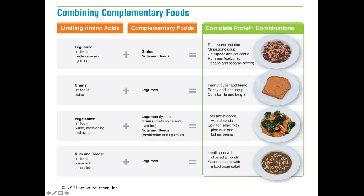Corn tortillas and beans — a bean burrito — is life food. Vegetables tend to be limited in lysine, methionine, and cysteine, so you supplement vegetables with legumes for the lysine and grains, nuts, and seeds for the methionine and cysteine. Things like tofu and broccoli with almonds, or a spinach salad with pine nuts and kidney beans, will give you a complete protein. Nuts and seeds tend to be limited in lysine and isoleucine, so you supplement with legumes — things like lentil soup with slivered almonds. It's absolutely possible to get plenty of protein without eating animal sources.